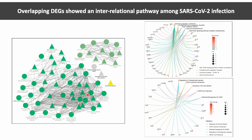Notably, overlapping DEGs, or differentially expressed genes, show an interrelational pathway among SARS-CoV-2 infection with diabetic complications and inflammatory response pathways.